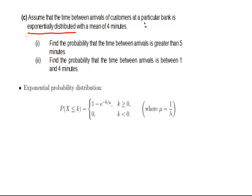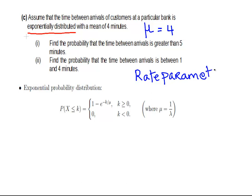We're told that mu is equal to 4 minutes. The other thing that we would know and remark upon is that there's another thing called lambda, and lambda is the rate parameter, and it's also quite important. Lambda is the rate parameter — it's equal to 1 over mu, and that is equal to 1 over 4.